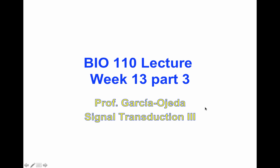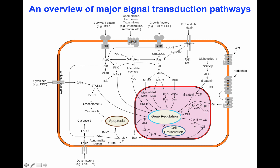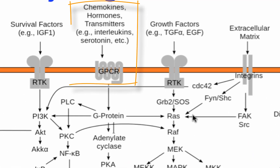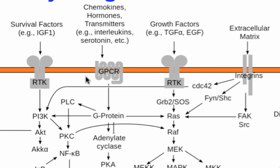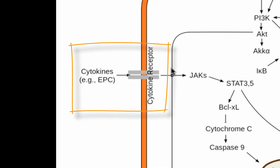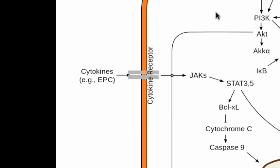Welcome to the last lecture of Bio 110. We are going to be covering two or three different topics that are going to be the last of the series in signal transduction. This image shows an overview of the major signal transduction pathways covered in class. We have talked about G-protein coupled receptors, which can be activated by chemokines, hormones, or other neurotransmitters, and we have also learned about receptor tyrosine kinase. Today, we are going to be looking at cytokine receptors as well as some of the signals activated through all three of these receptors.